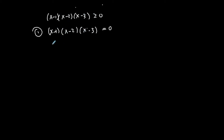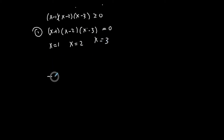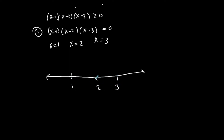This is already factored, which is nice. From the first factor I get the solution 1, from the second I get 2, and from the third I get 3. Once I have those solutions to the equation, they are boundary points on the number line, so I put them on a number line.